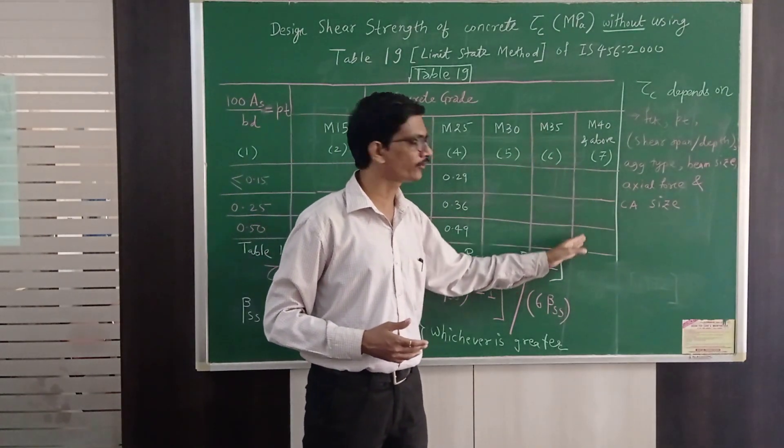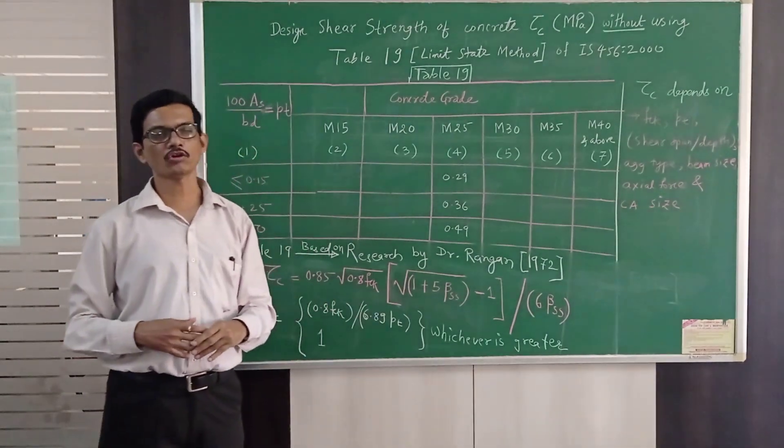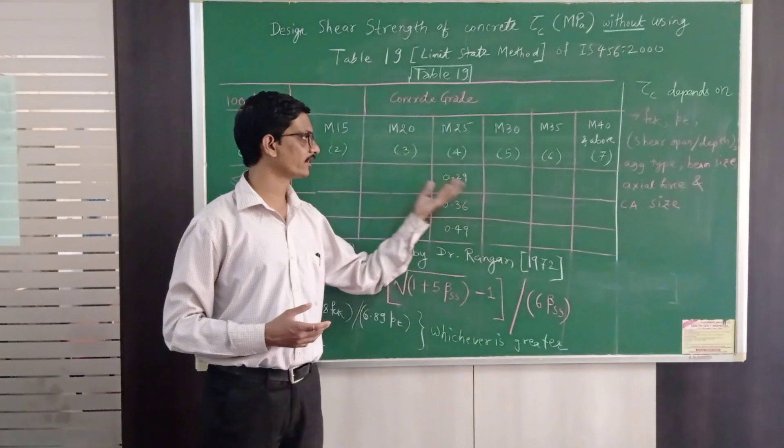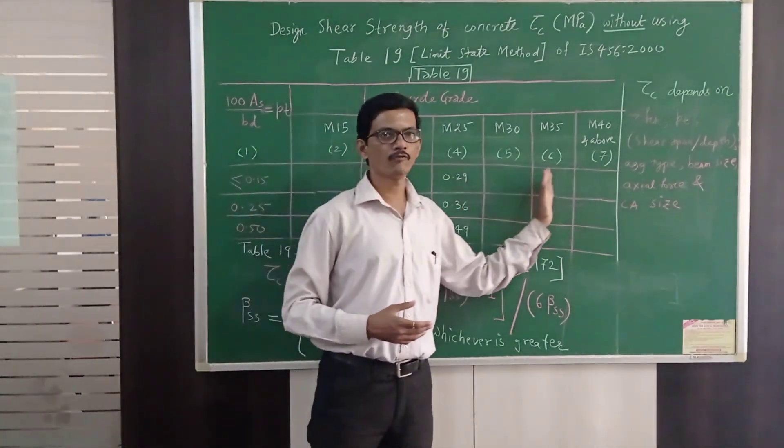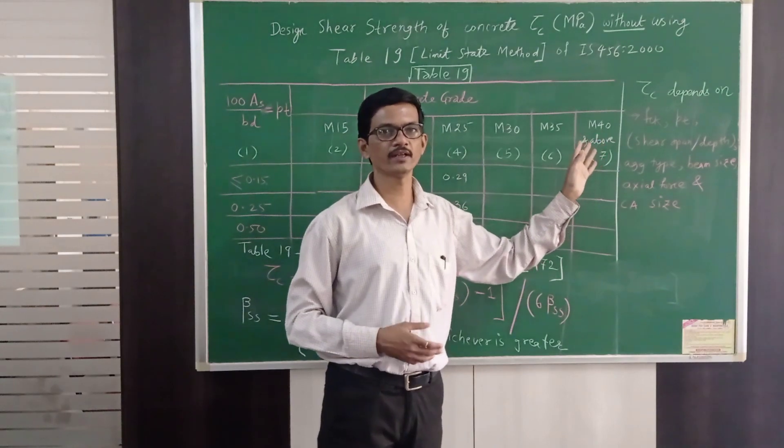But still I use the same value of tau c because it says M40 and above and therefore there is a lot of research scope here, especially in this shear strength. That someone can come up for grades like M50, M60, M120 or even M150.